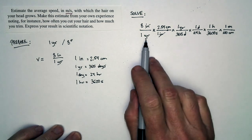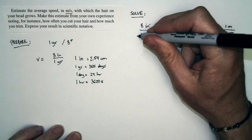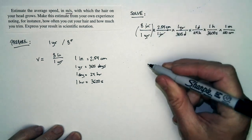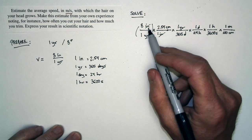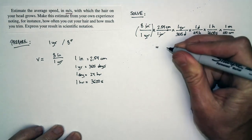So we have a series of factors that we can multiply by, and we'll multiply all those factors times our original speed, and that will convert the units from inches per year into meters per second. If we complete that, we get 8 times 10 to negative 8 meters per second.